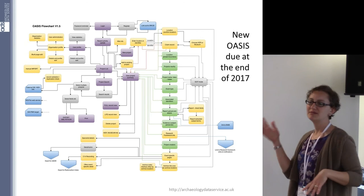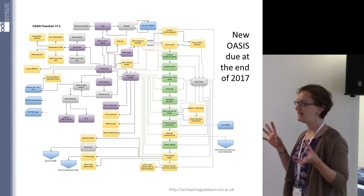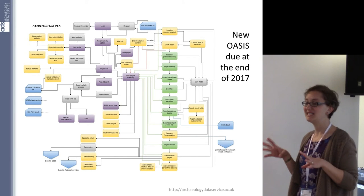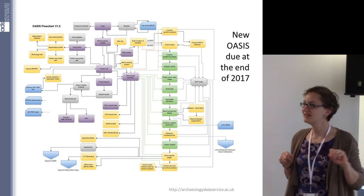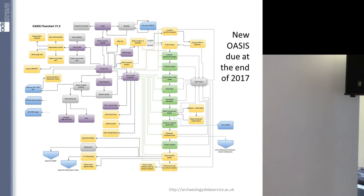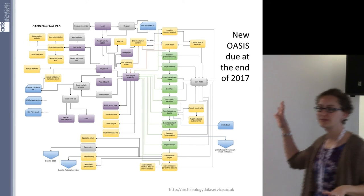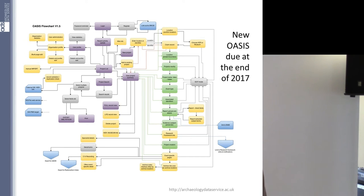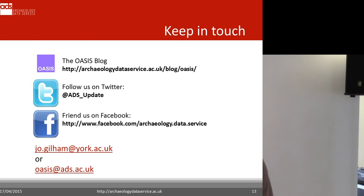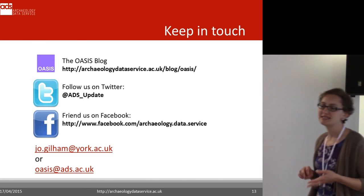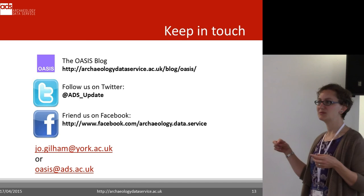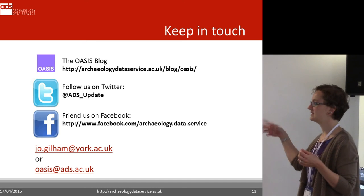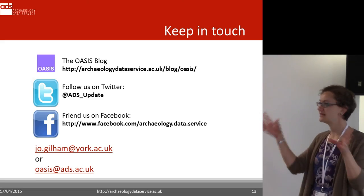If all goes to plan with the current timetable, a new OASIS would be due at roughly the end of 2017. This is what it currently looks like — all the yellow bits are new and all the blue bits are links out to external systems. The findings of the survey will be coming up on the OASIS blog. There were eight different user groups, so there'll be eight different blog posts according to the different user groups who answered the survey, coming up in the next few weeks.